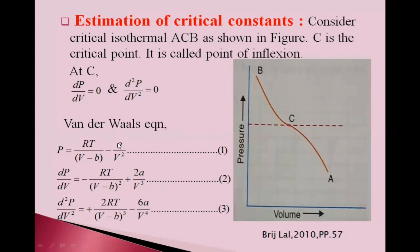So, you know, Van der Waals equation is P equal to RT upon V minus b minus a upon V square. From Van der Waals equation, we can get value of P. So, differentiate this P with respect to volume.